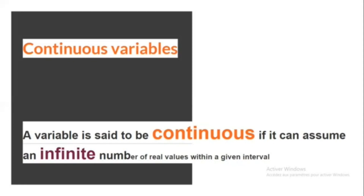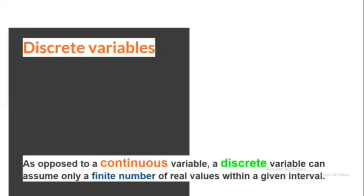Age is another example of a continuous variable that is typically rounded down. As opposed to a continuous variable, a discrete variable can assume only a finite number of real values within a given interval. For example, the score given by a judge to a gymnast in competition ranges from 0 to 10 and is always given to one decimal — e.g., a score of 8.5. You can enumerate all possible values: 0, 0.1, 0.2, and so on — the number of possible values is finite; it is 101. Another example is the number of people in a household of size 20 or less, giving 20 possible values, since fractional counts like 2.27 are not possible.